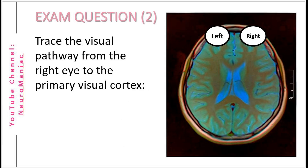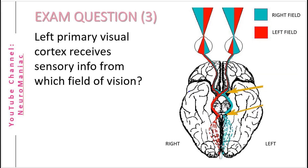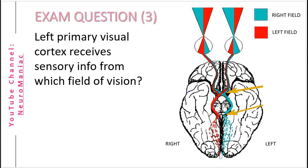Question 2: on this diagram, trace the pathway from the right eye to the primary visual cortex. You should have something similar to this. Question 3: the primary visual cortex of the left hemisphere receives sensory information from which fields of vision? Take a moment to study this image. If you said right field of vision of both eyes, then you're correct. An easy way to remember this is that the visual cortex receives contralateral information.